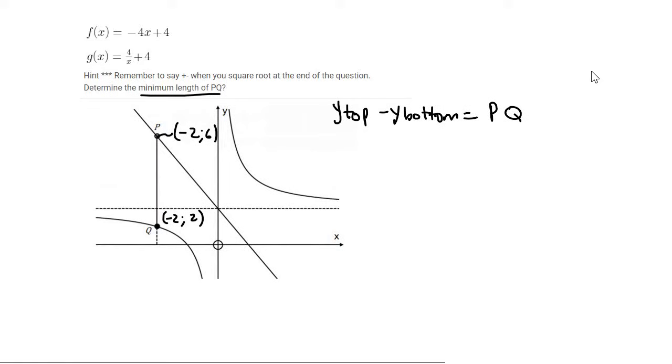Now we don't really want to work with y's, so what we do is we replace y top with its equation. That's the straight line equation. Then we say minus, in brackets, y bottom is the hyperbola, which they've given us over here, and that's going to be 4 over x plus 4, and that must equal the length of PQ.